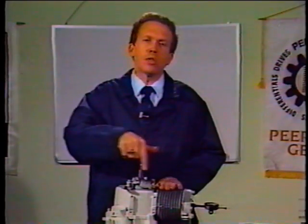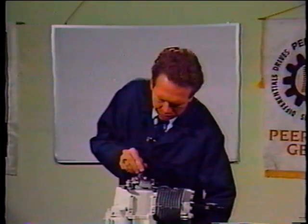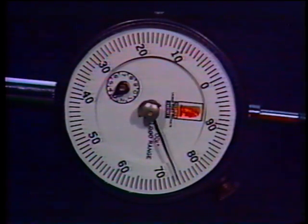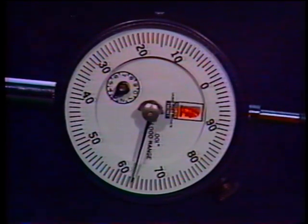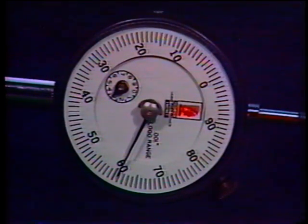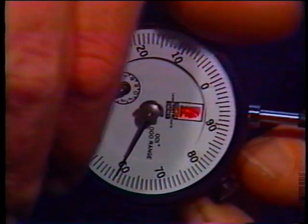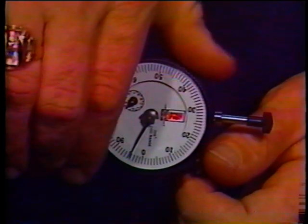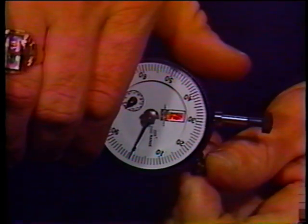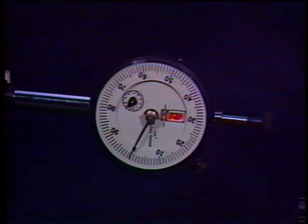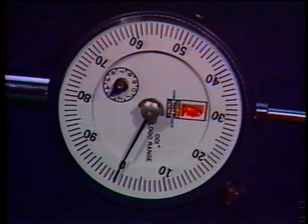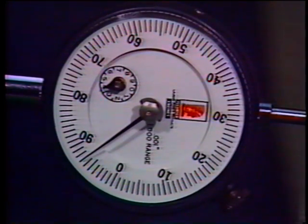All of our engines from the magneto end run in a clockwise rotation. To find the proper top dead center dimension, after setting your points on the high side of the cam, turn the engine counter-clockwise just a little bit, then turn it clockwise until the needle on the dial indicator stops and changes direction. That stopping point is top dead center. Zero out the dial indicator. Now turn the engine counter-clockwise past 80 thousandths, then turn it back clockwise to 80 thousandths.